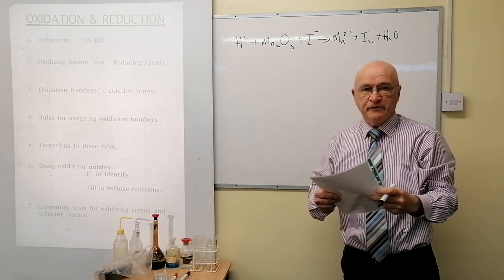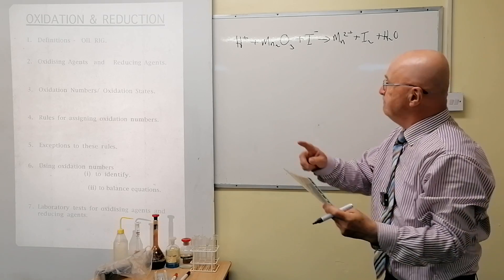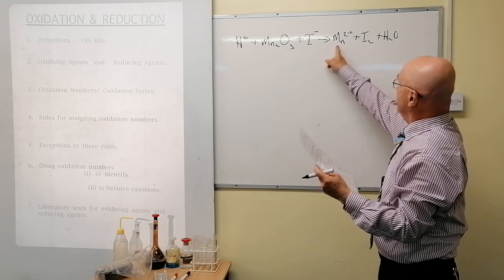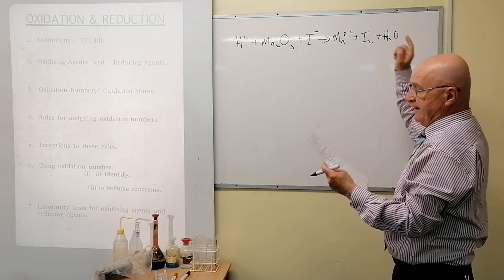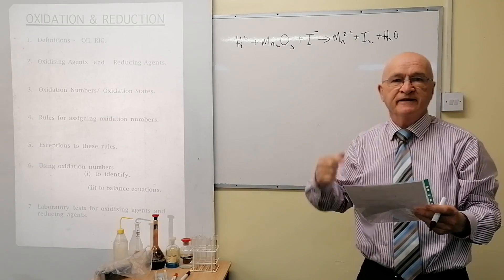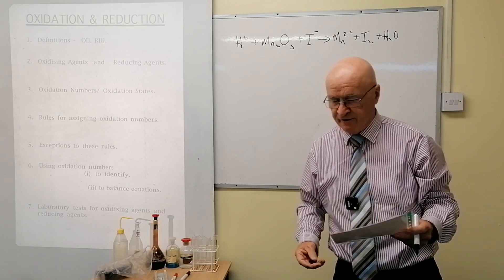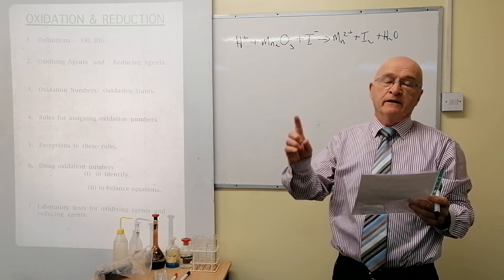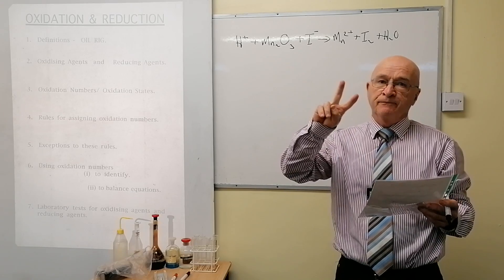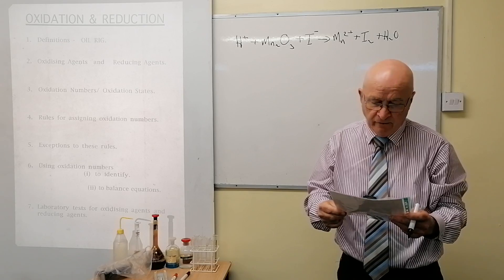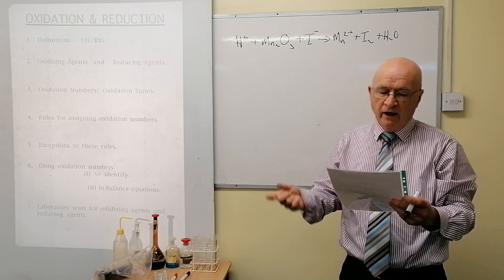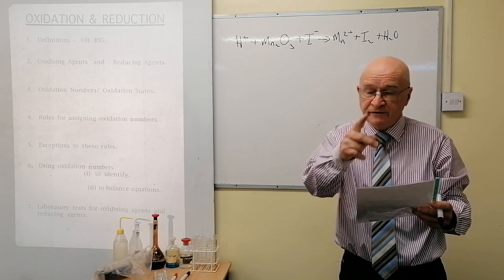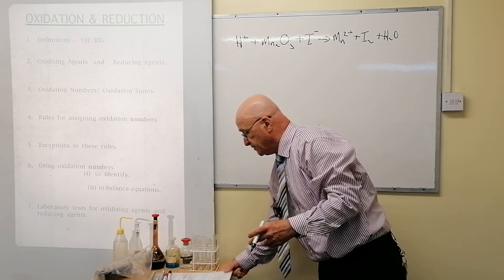Please take it down correctly: H⁺, Mn₂O₃, I⁻, Mn²⁺, I₂, and H₂O. Now they ask you various things about it. Show that this is an oxidation-reduction reaction — you'd assign oxidation numbers to everything and see there was a change in oxidation number for two species, one being oxidized and the other being reduced. Identify the species oxidized and reduced, and then balance the equation. That's why I'm bringing this to your attention — it's very important.